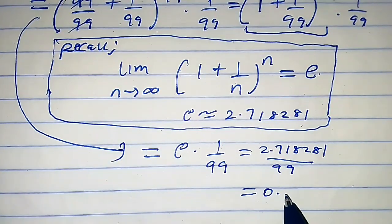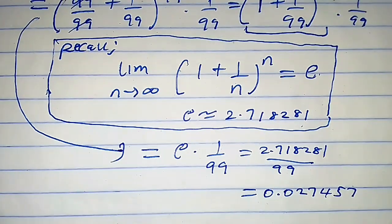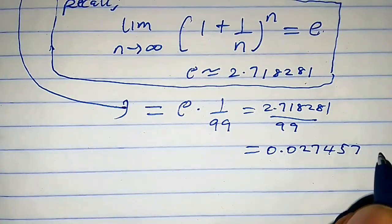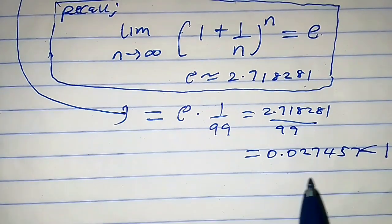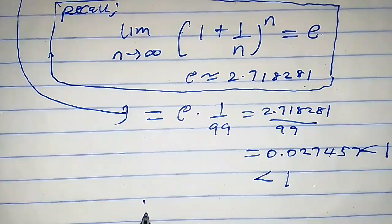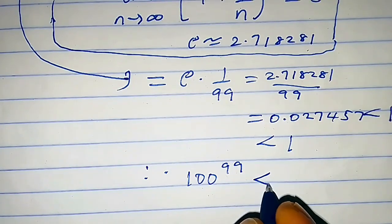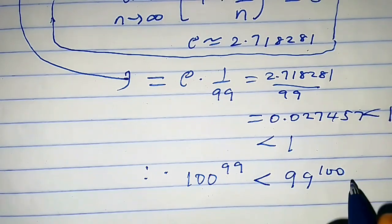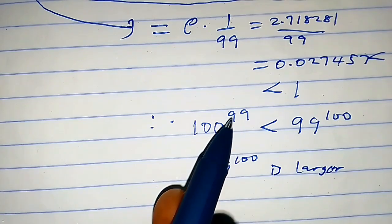This equals approximately 0.027457, and we know that 0.027457 is less than 1. Therefore, 100^99 < 99^100. So 99^100 is larger than 100^99.